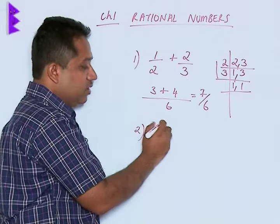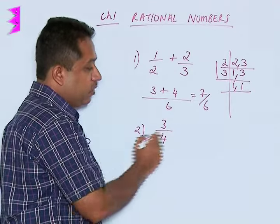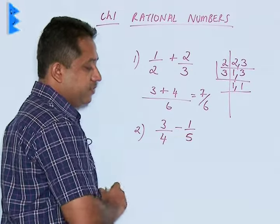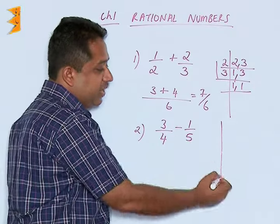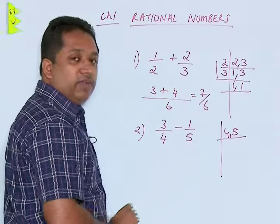The same we can try out for subtraction. Let us say we are having a number 3 by 4 and we are subtracting 1 by 5. Again we find that the denominators are different. We are going to find out the LCM of the denominators, that is the LCM of 4 and 5.